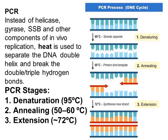In PCR, instead of using helicase and single-stranded stabilizing proteins — all the components that normally unwind the double helix — I replace all of this with heat. I heat to 95 degrees, which breaks the double and triple hydrogen bonds in the DNA. This is the first stage of PCR: denaturation — breaking the double helix and the hydrogen bonds between the complementary strands.